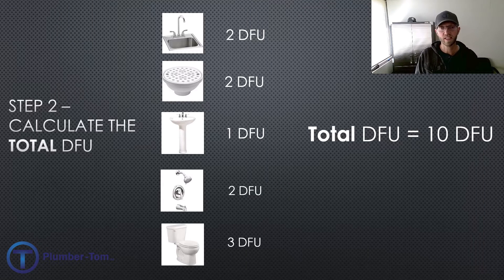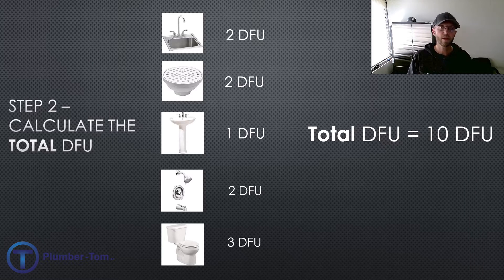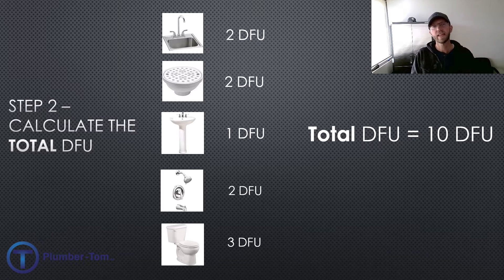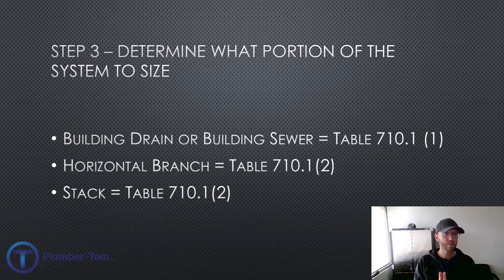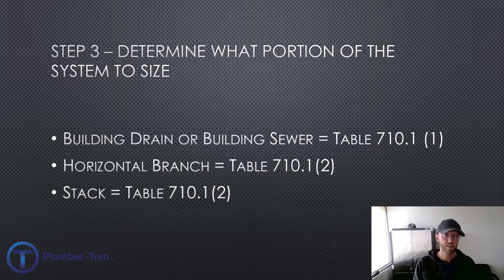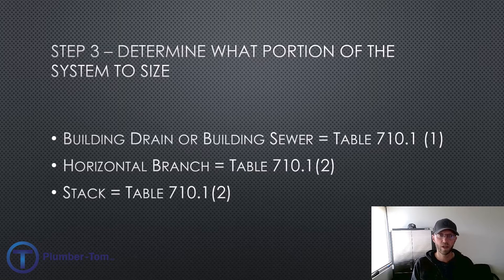Step two: total all those drainage fixture units. Two from the sink plus two from the floor drain, one from the lavatory, two from the tub/shower, and three from the toilet gives a total of 10 drainage fixture units. Step three: determine what portion of the system we're dealing with — building drain, building sewer, horizontal branch, or stack? To catch all those fixtures, we're most likely dealing with a horizontal branch.